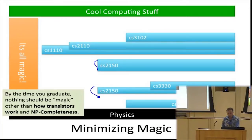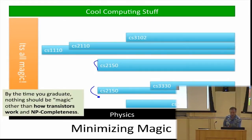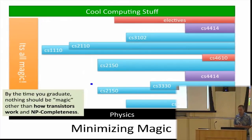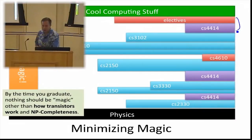Between the architecture layer — understanding how instructions and memory were represented in 2150 — and how high-level programs work, there's a lot of things going on that are still unclear. We're going to try to fill in most of those gaps. Some of the gaps are at the low level, like how a program actually executes; some are more at the high level, like how you build really big complex systems and make them work.